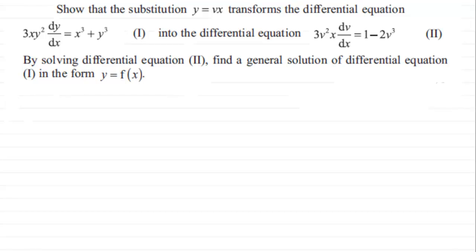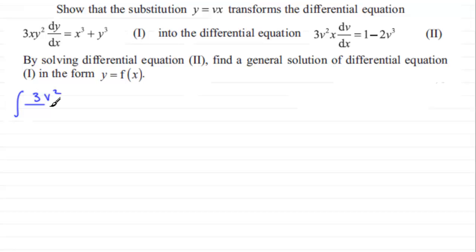With this differential equation, what we can do is separate the variables — put all the v's on one side and all the x's on the other. If we do that and integrate both sides, we get the integral of 3v squared divided by 1 minus 2v cubed, integrated with respect to v, equals the integral of 1 over x with respect to x.